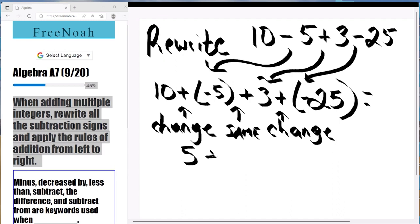10 + (-5) equals positive 5. And now we just simply bring all of the other values down. So we got 5 + 3 + (-25). That's our next regrouping there.